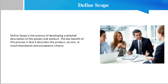The Define Scope process can be highly iterative. In iterative life cycle projects, a high-level vision will be developed for the overall project, but the detailed scope is determined one iteration at a time, and the detailed planning for the next iteration is carried out as work progresses on the current project scope and deliverables.